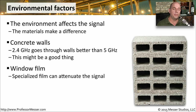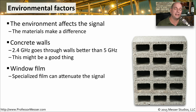In some environments, we have to be aware of the type of film that is on a window. Some window film can decrease or attenuate the wireless signal passing through it. This might be very good if you want to keep that wireless signal on the inside of a building, but if you need to have that signal go outside, you want to be sure there's no film on the window that would prevent that from occurring.